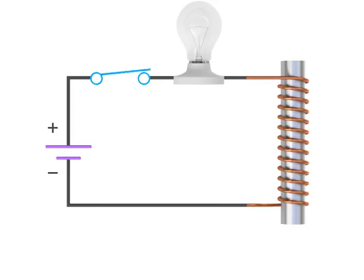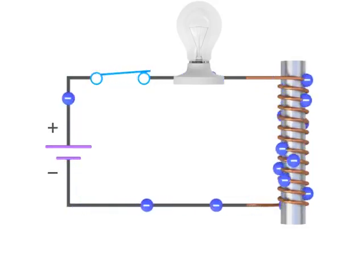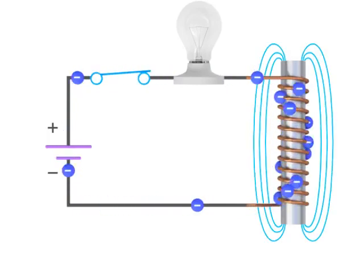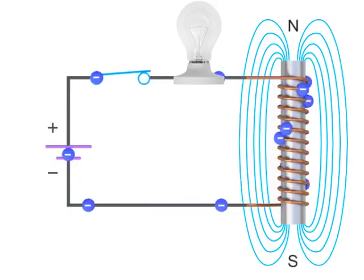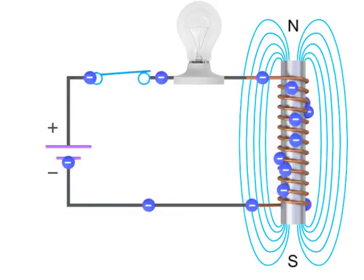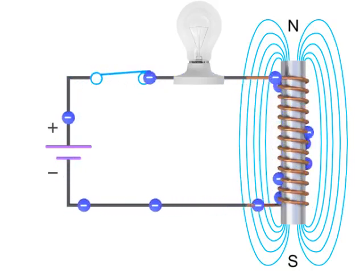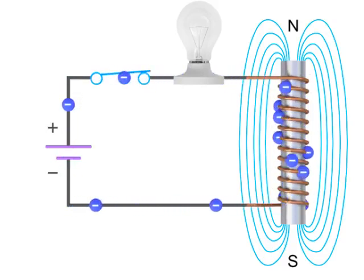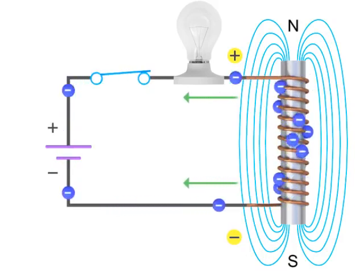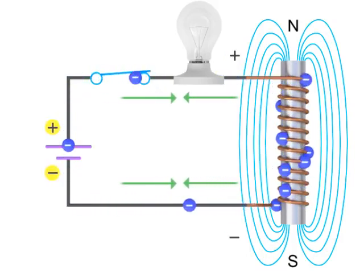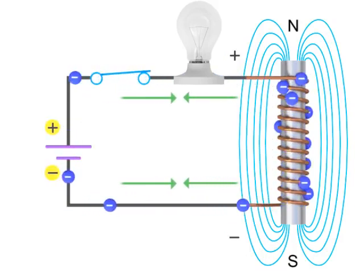As the switch is closed and the current flows through the circuit, the electromagnetic field in the inductor forms and expands rapidly. However, because of the unique properties of an inductor, as the flux lines of the electromagnetic field expands, the changing current generates a voltage that resists the current coming from the source.